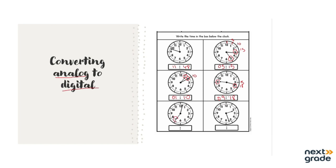Next example: the hour hand is on 7 and the minute hand is 2 minutes past. That is 1 and 2 minutes past. So we will write this as 07:02.